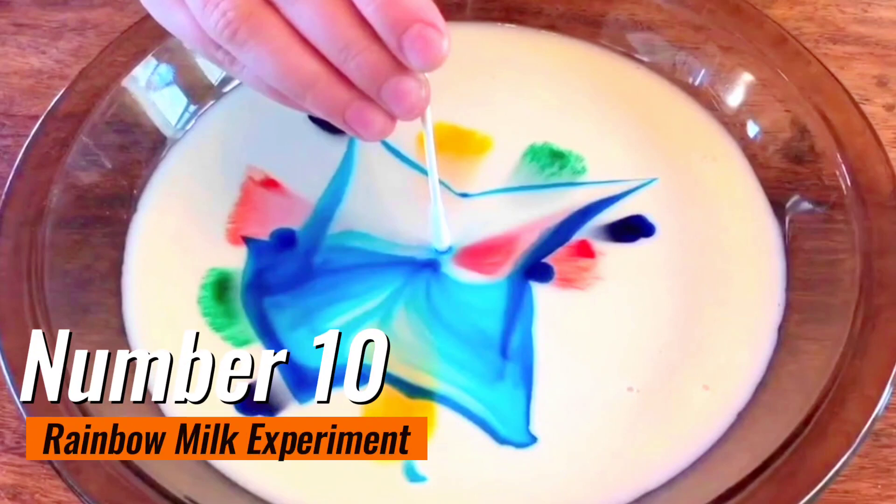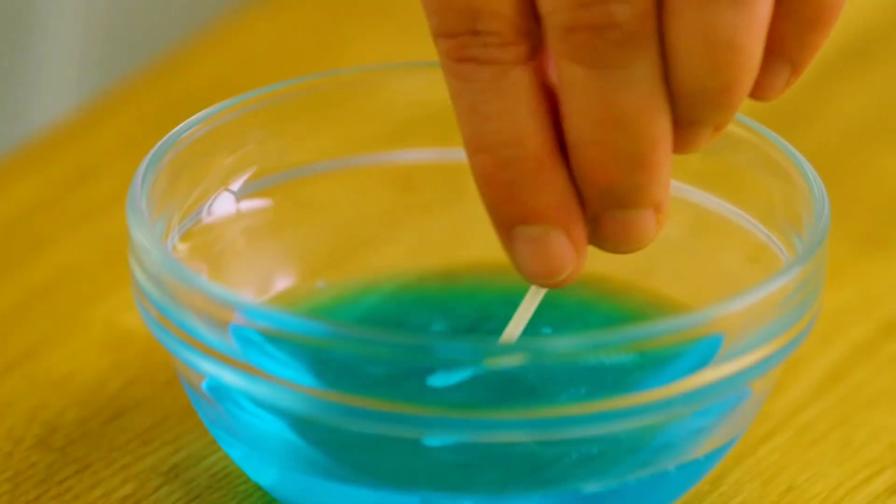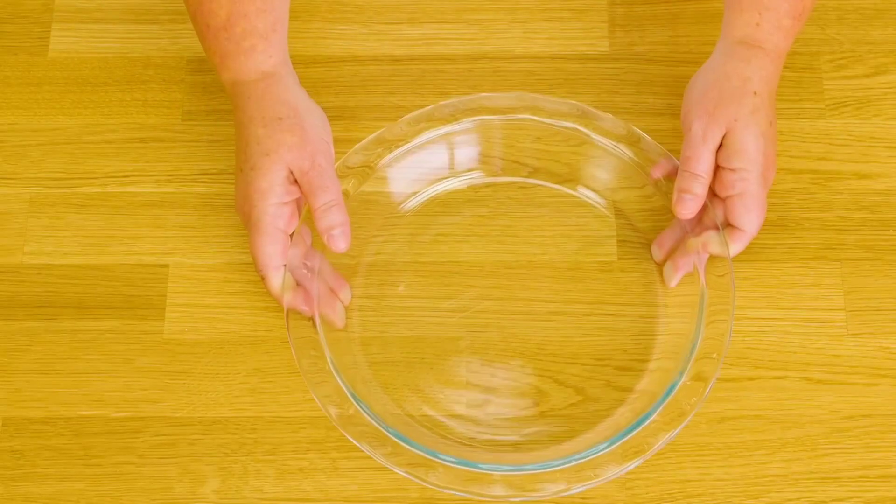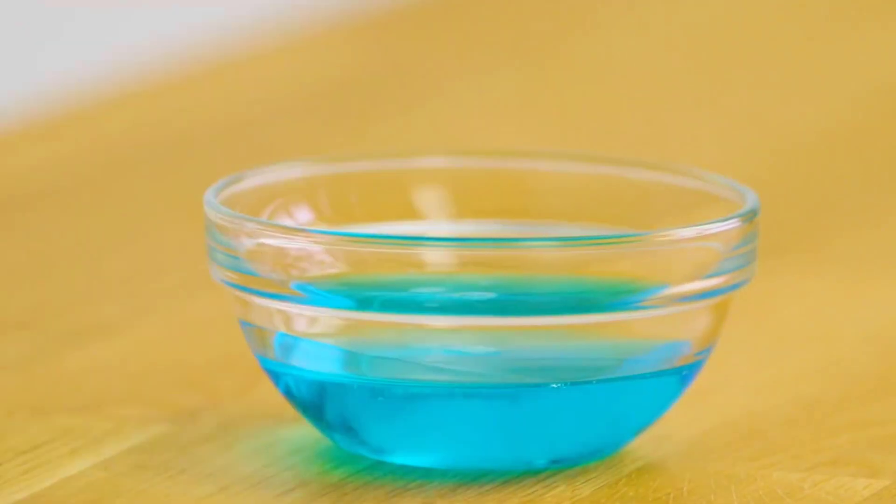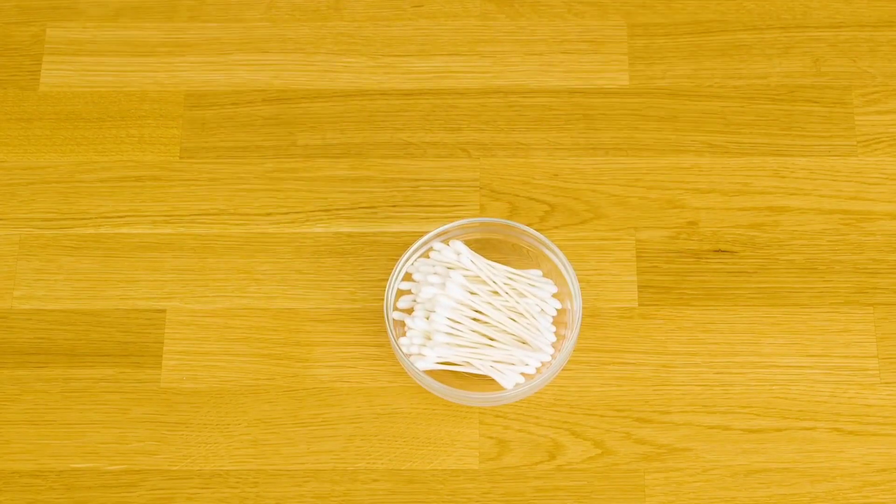Number 10. Rainbow Milk Experiment. The rainbow milk experiment is a fascinating and colorful science activity that will amaze kids of all ages. To conduct this experiment, you will need a shallow dish, whole milk, food coloring, and dish soap.